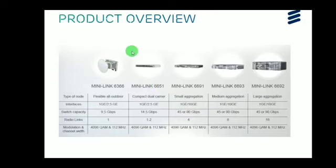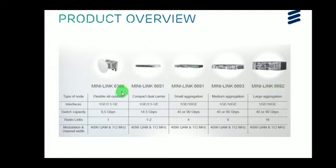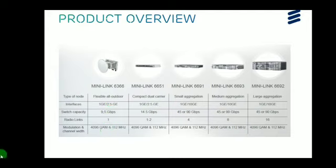This is a product overview of the 6600 series. We start with Minilink 6366, Minilink 6651, Minilink 66691, 66693 and 66692. For the 6366, it has 1 Gigabit Ethernet and 2.5 Gigabit Ethernet interfaces. Its switch capacity is 9.5 Gbps, it supports one radio link, and the modulation and channel bandwidth schemes are 4096 QAM (Quadrature Amplitude Modulation) and 112 MHz bandwidth.